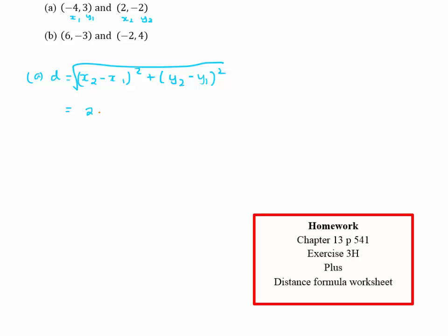So x₂ in this case is going to be 2 take away -4, and I'm going to square the whole thing. Plus y₂, which is -2, take away y₁, which is 3, and I'm squaring that, and I'm taking the square root.